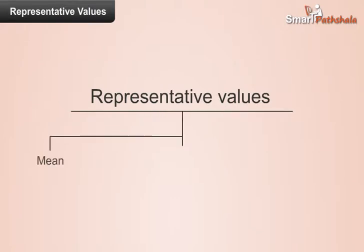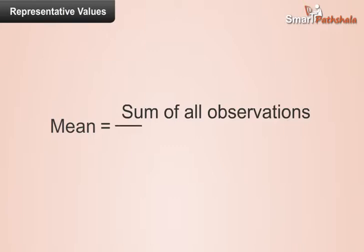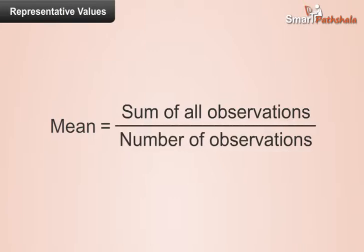1. Mean 2. Median 3. Mode. Now let us know what is mean. Mean is defined as by dividing the sum of all observations by number of observations.